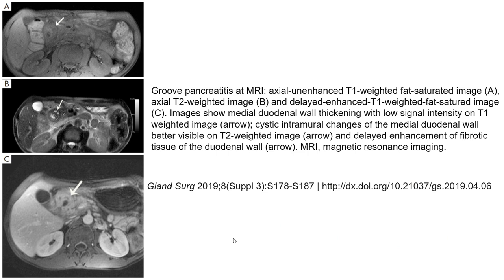Groove pancreatitis on MRI. Image A is the axial fat-suppressed T1-weighted image, image B is the axial T2-weighted image, and image C is the delayed enhanced T1-weighted image. The duodenal wall shows low signal intensity on T1-weighted imaging — arrow indicated — with cystic intramural changes in the duodenal wall better visible on T2-weighted imaging — arrow indicated — and delayed enhancement of fibrotic tissue in the duodenal wall — arrow indicated.